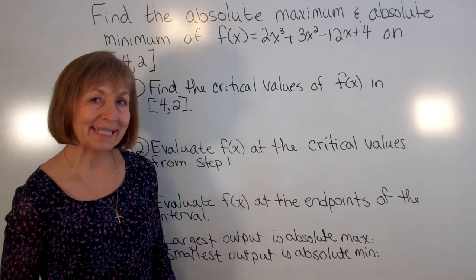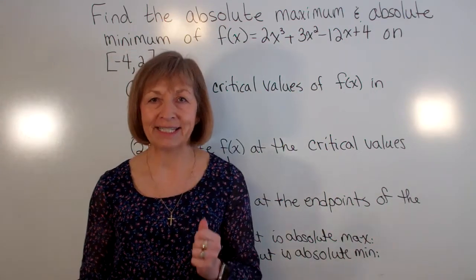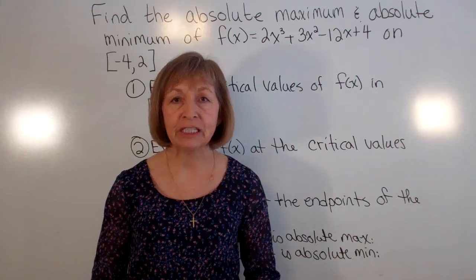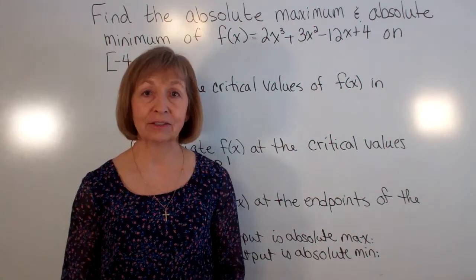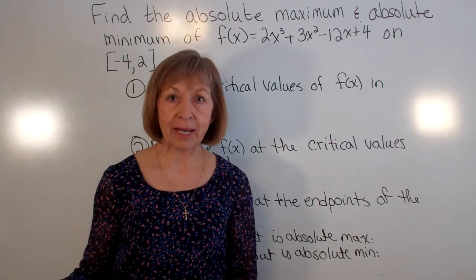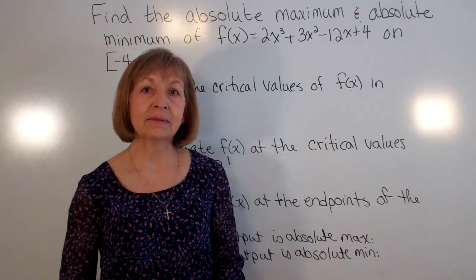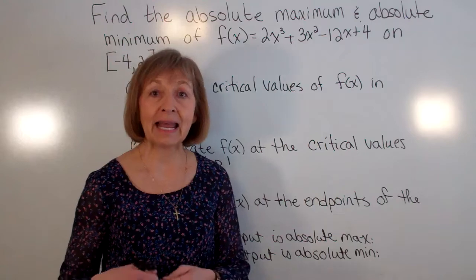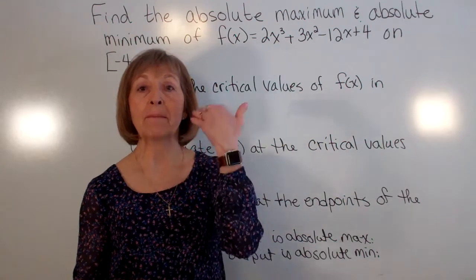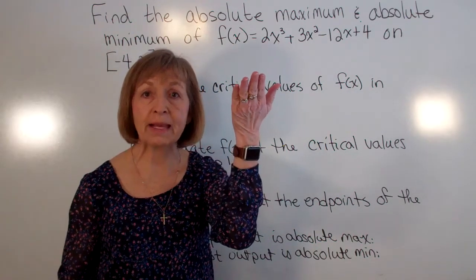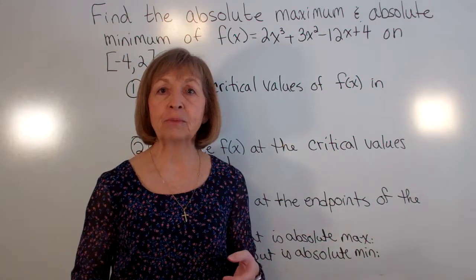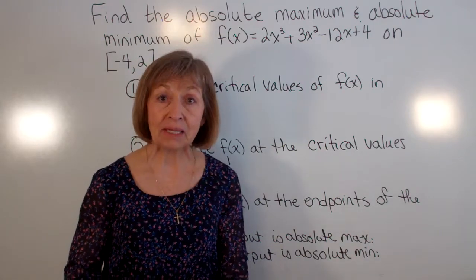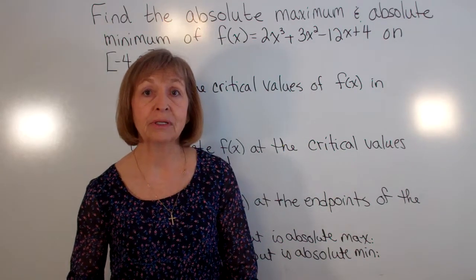But basically it says that if you have a continuous function over a closed interval, you're guaranteed that for some value in that closed interval, counting possibly at the endpoints, to have a place where that x input would give you an absolute maximum function value output as well as an input that would give you an absolute minimum function value output.